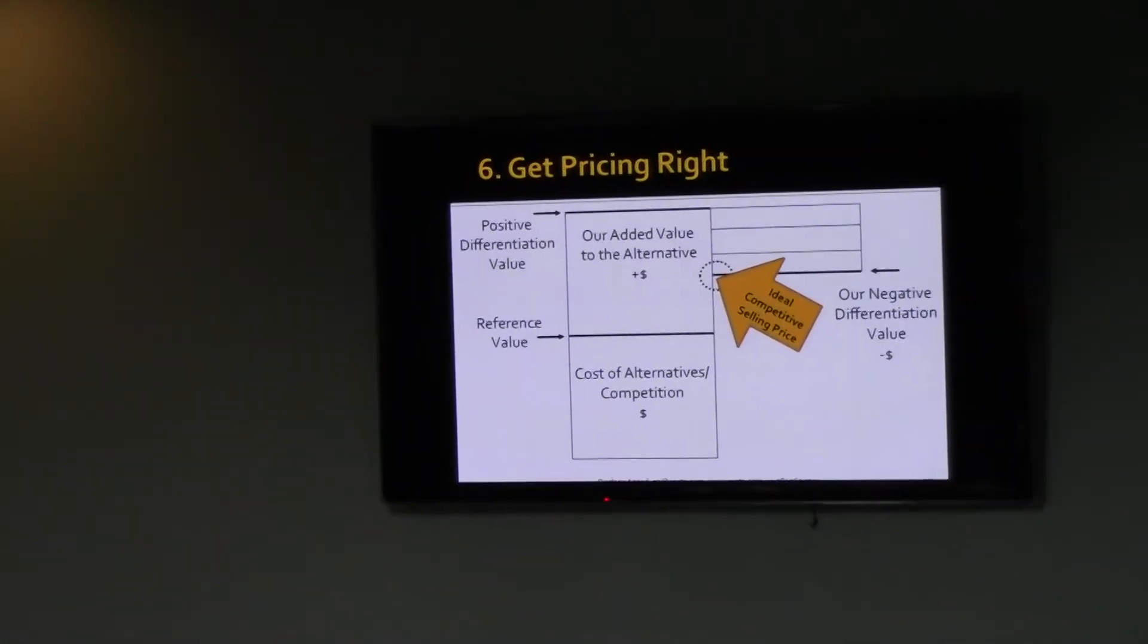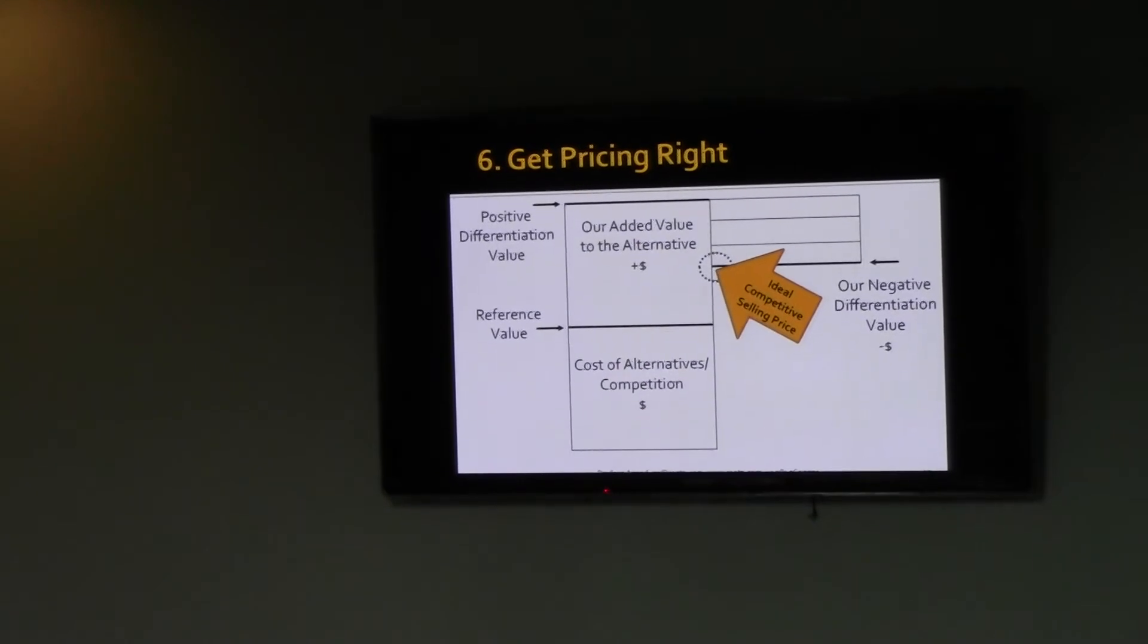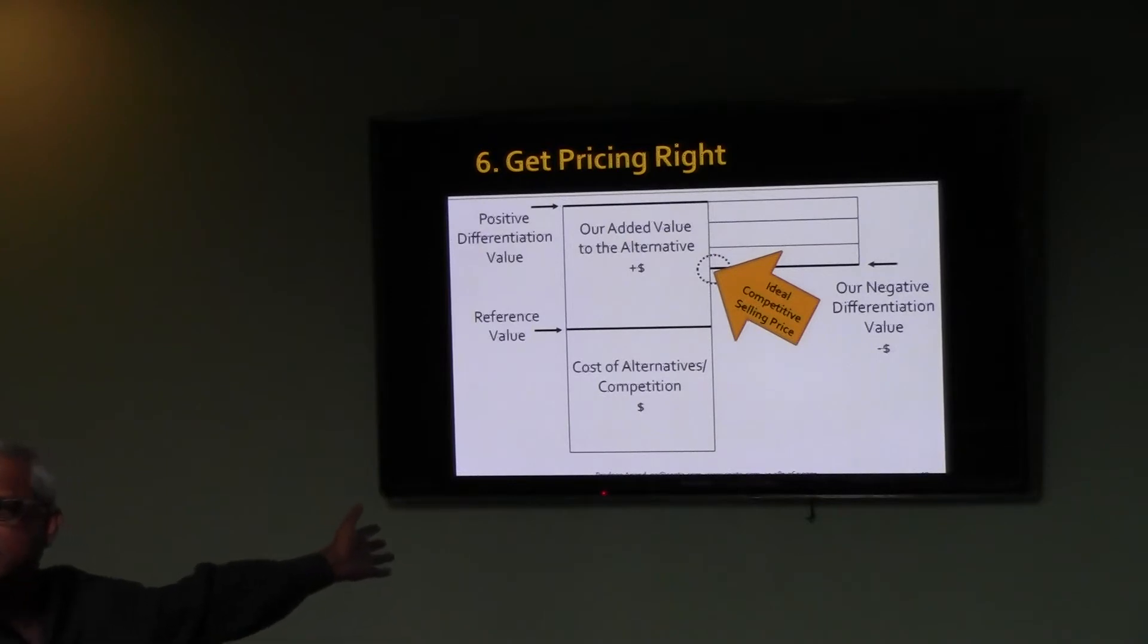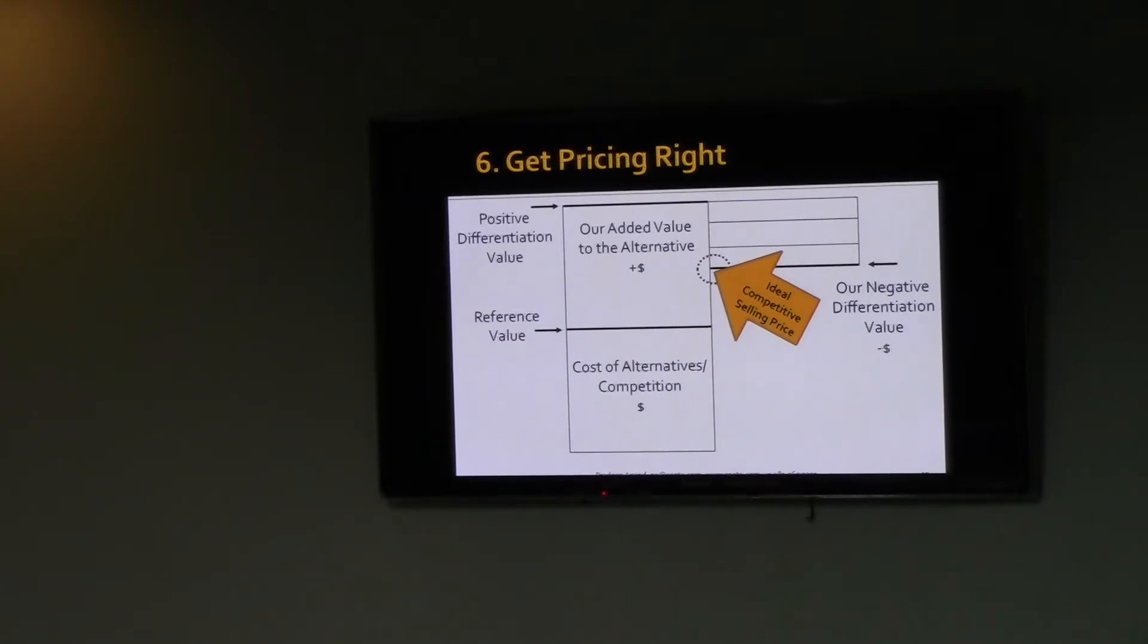I've spoken a lot about this. Get your pricing right. You must know your ideal competitive selling price. If you don't get your pricing right, it's a very simple graph. An ideal competitive selling price is a reference value, which is the cost of an alternative. This is the old way of doing something. What is the added value that we provide to that?